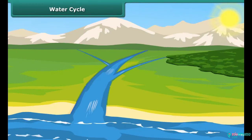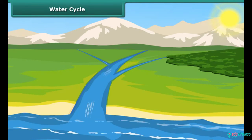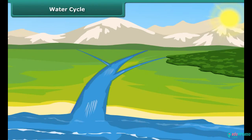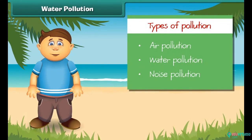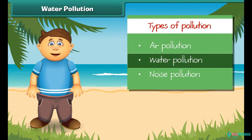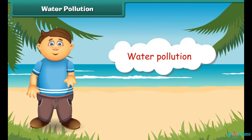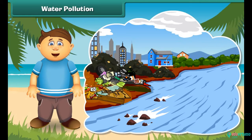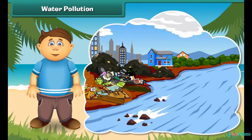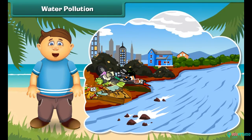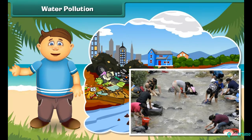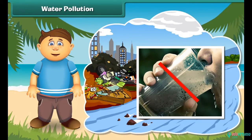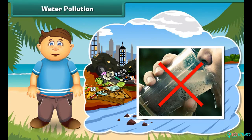The water received by earth as rain, hail or snow goes into the oceans, seas, rivers and lakes. Now, water also gets polluted, just like air. A river that receives sewage from homes and waste from factories becomes very dirty. Some people also wash their clothes and throw waste into it. We should not drink this water as it contains germs and may result in diseases.